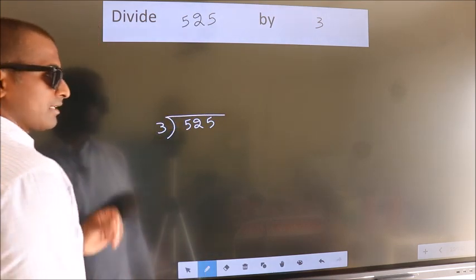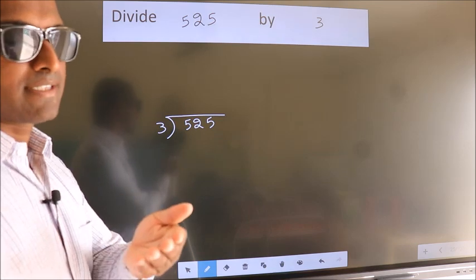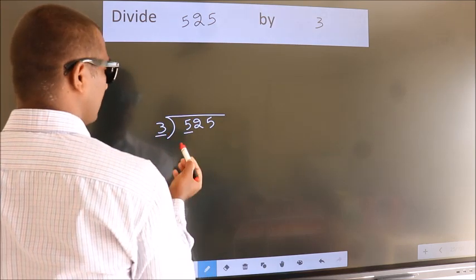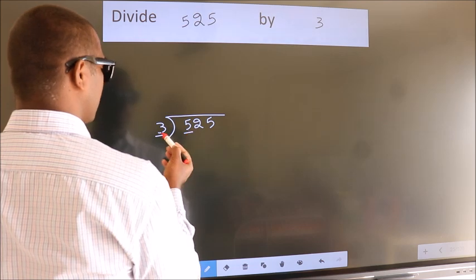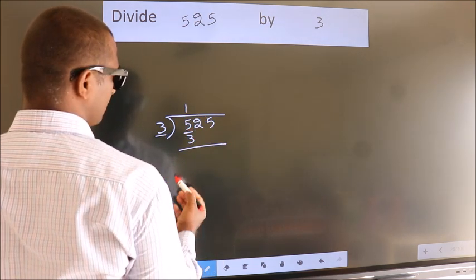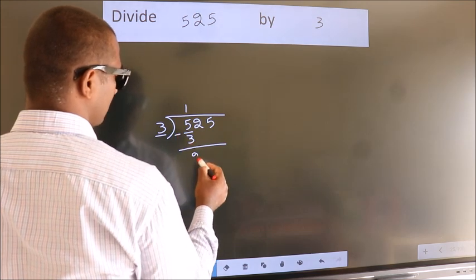This is your step 1. Next. Here we have 5, here 3. A number close to 5 in 3 table is 3 ones 3. Now we should subtract. We get 2.